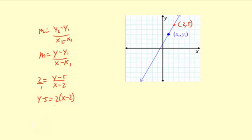So it's 2 times x is 2x. First I'll put y minus 5, 2x. And then 2 times negative 2 is negative 4, and I'm going to add 5 to both sides. And I'm going to finish this up here. So it's going to be y equals 2x, and then negative 4 plus 5 is plus 1. How's that?